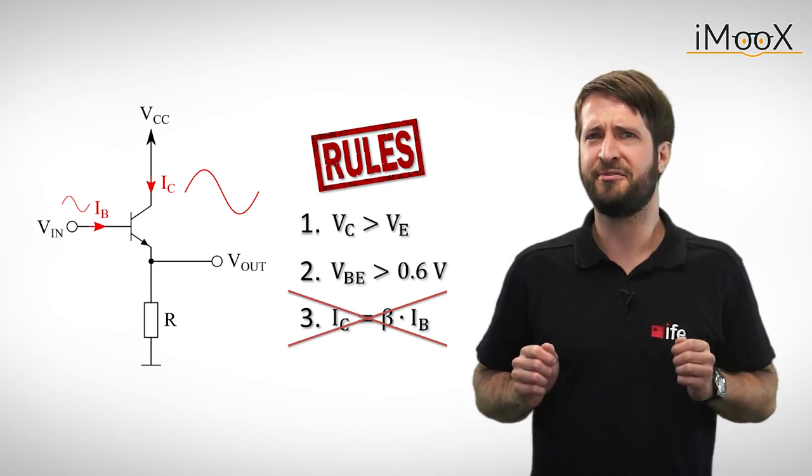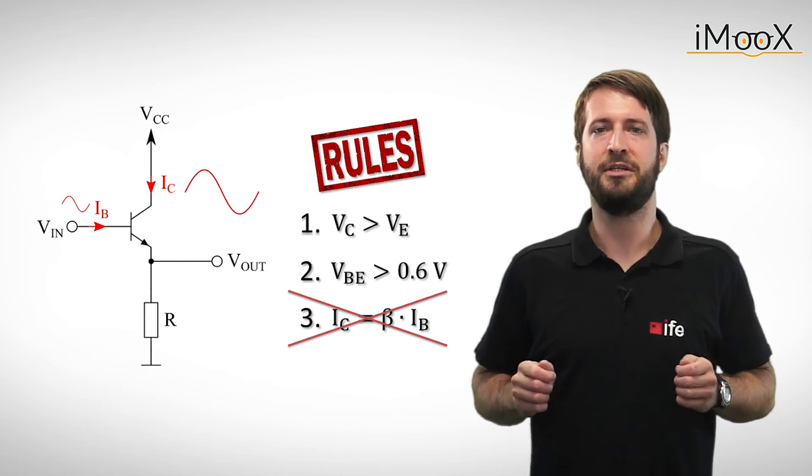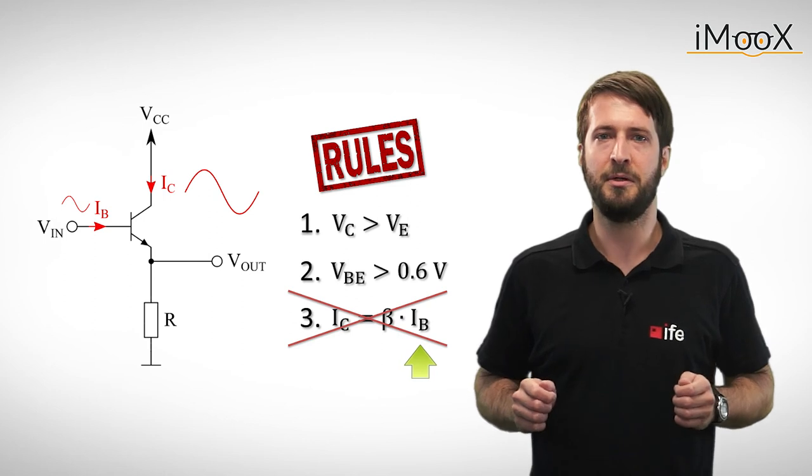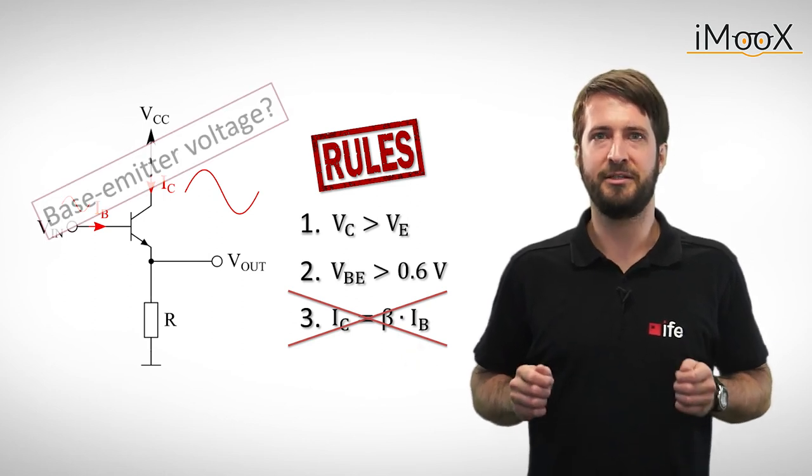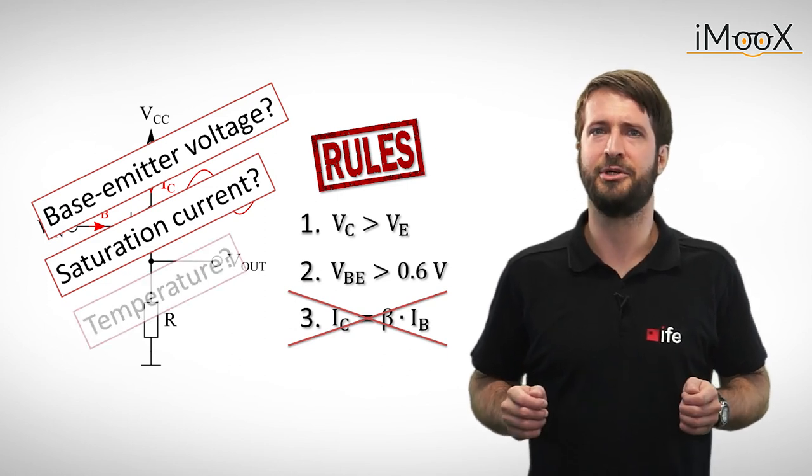As we now know, IC is not only dependent on beta and the base current, IB, but also on the base emitter voltage, the saturation current and, to make things even worse, the temperature.